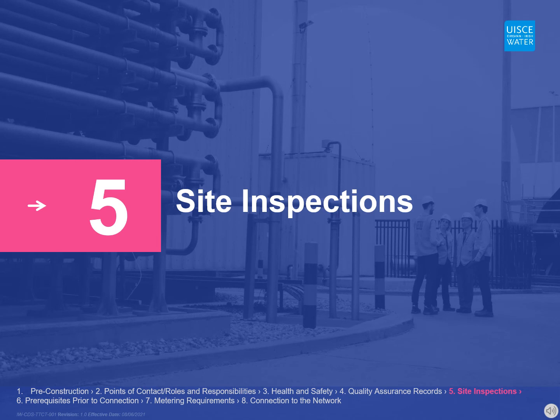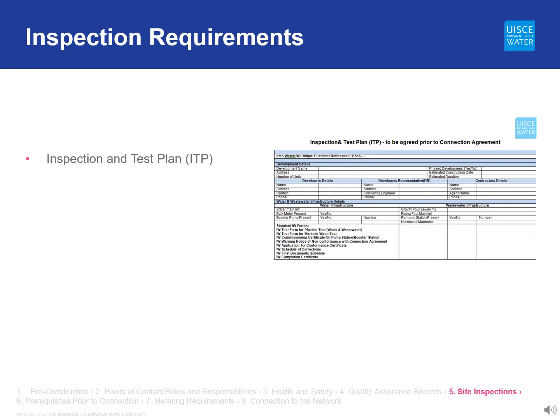Once construction begins, site inspections — both scheduled and unscheduled — are carried out by the field engineer to check for compliance with Irish Water standards. These inspections may be to monitor works in progress, witness testing, or to conduct a walk-off inspection. An inspection and test plan should be prepared by the developer's construction engineer in line with the testing and commissioning requirements outlined in the Irish Water Codes of Practice for both water and wastewater. The inspection and test plan should be forwarded to the field engineer for review and should include the proposed dates and sequence for testing on site. Irish Water must be given a minimum of five days notice before any testing, so that the field engineer can witness the test if required. The field engineer can request a retest of any part of the works if they are not satisfied with the test result or if they were not given enough notice. The construction engineer should arrange batch tests where possible to minimise the number of visits the field engineer has to make to the site.